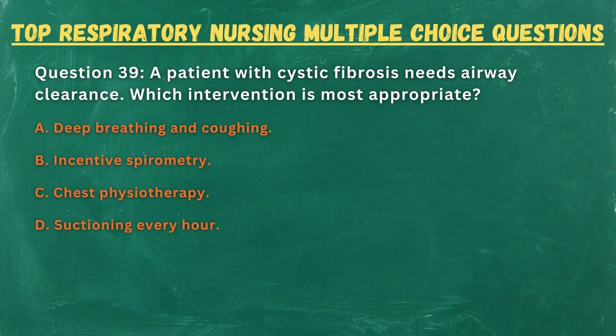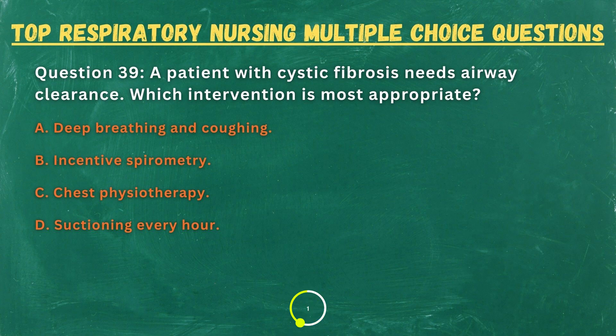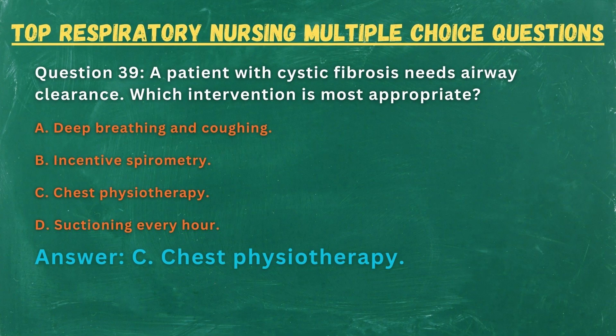Question 39. A patient with cystic fibrosis needs airway clearance. Which intervention is most appropriate? A. Deep breathing and coughing. B. Incentive spirometry. C. Chest physiotherapy. D. Suctioning every hour. Answer: C. Chest physiotherapy.